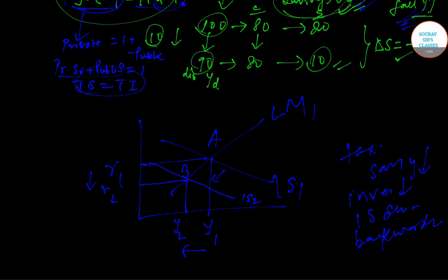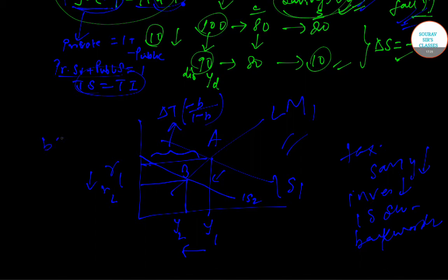The amount of change happening here is ΔT times the tax multiplier, which is −MPC / (1 − MPC), where MPC is the marginal propensity to consume — that is, if an individual's income rises by 1 rupee, by how much does their consumption rise.